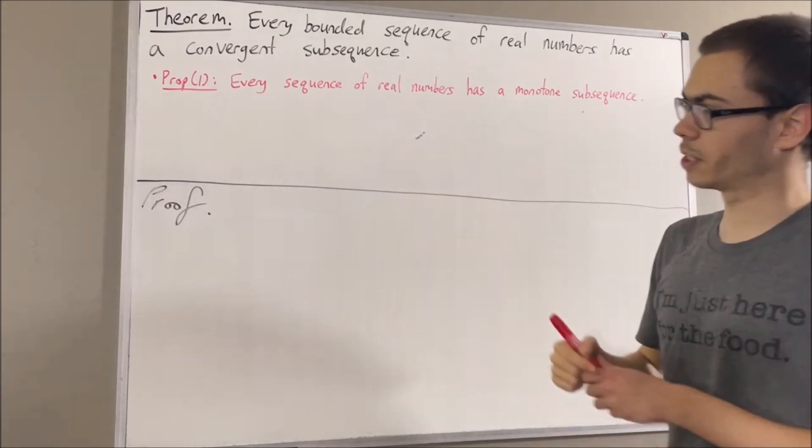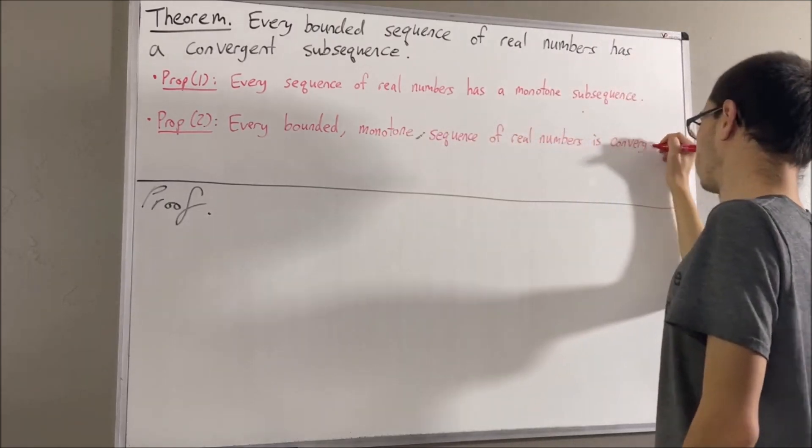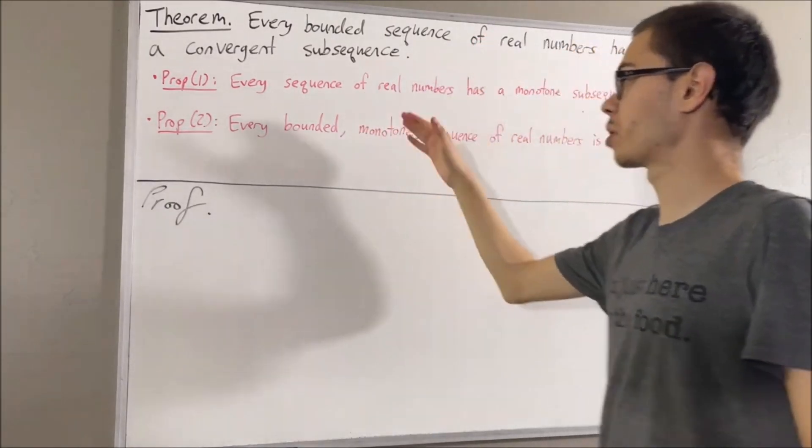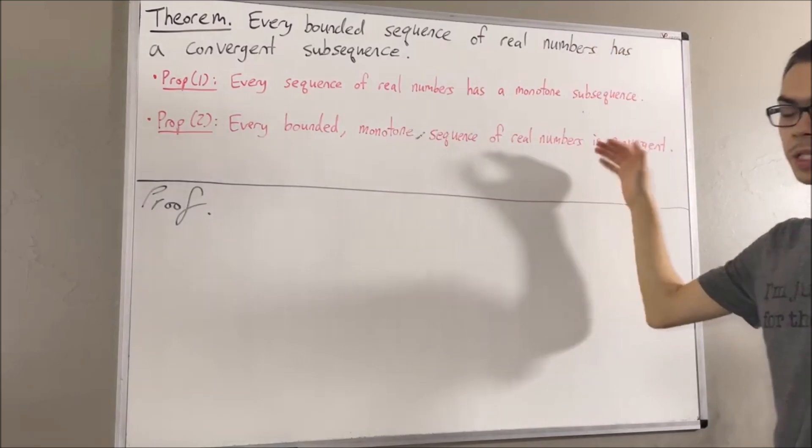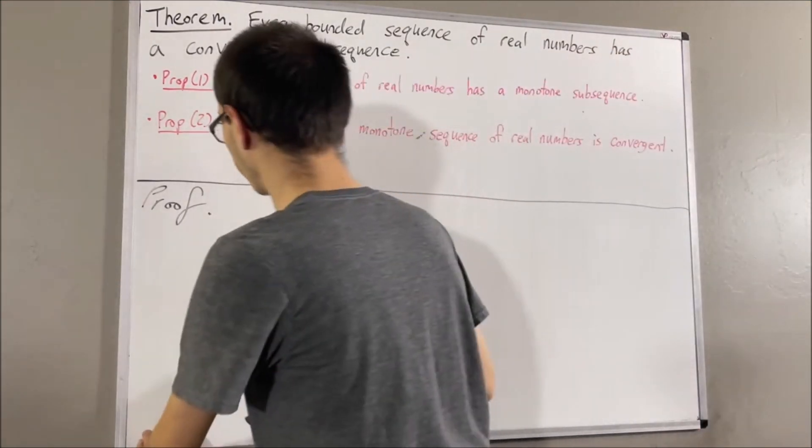Here's the second preliminary result. Every bounded monotone sequence of real numbers is convergent. So let's get into proving this theorem.